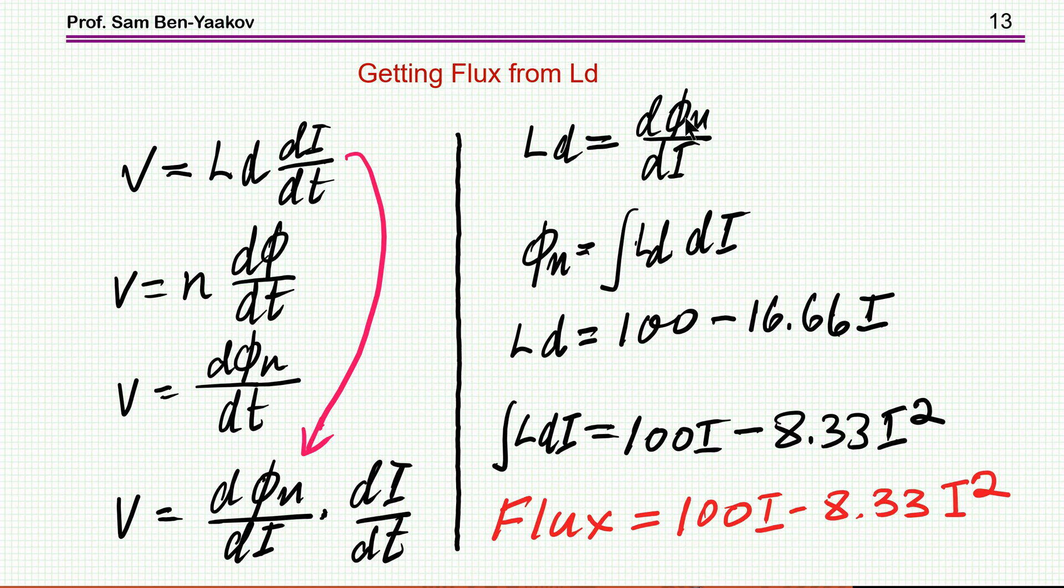Therefore, phi is the integral of LD dI. So in our particular example, I found that LD is 100 minus 16.6I, this is 50 over 3. The integral of this is 100I minus 8.33I squared. So this is the equation that I'm supposed to put here, because this now represents the flux, got it from here.